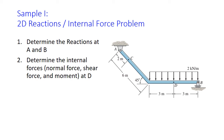We are now going to look at a couple examples. The first is this bar that's been bent, and there is a pin connection at A, a roller connection at B, as well as a distributed load along the bottom horizontal portion of the bar. First thing we're going to want to do is determine the reactions at A and B at the pin and the roller, as well as determine the internal force at point D, which is the midway point in the horizontal section.